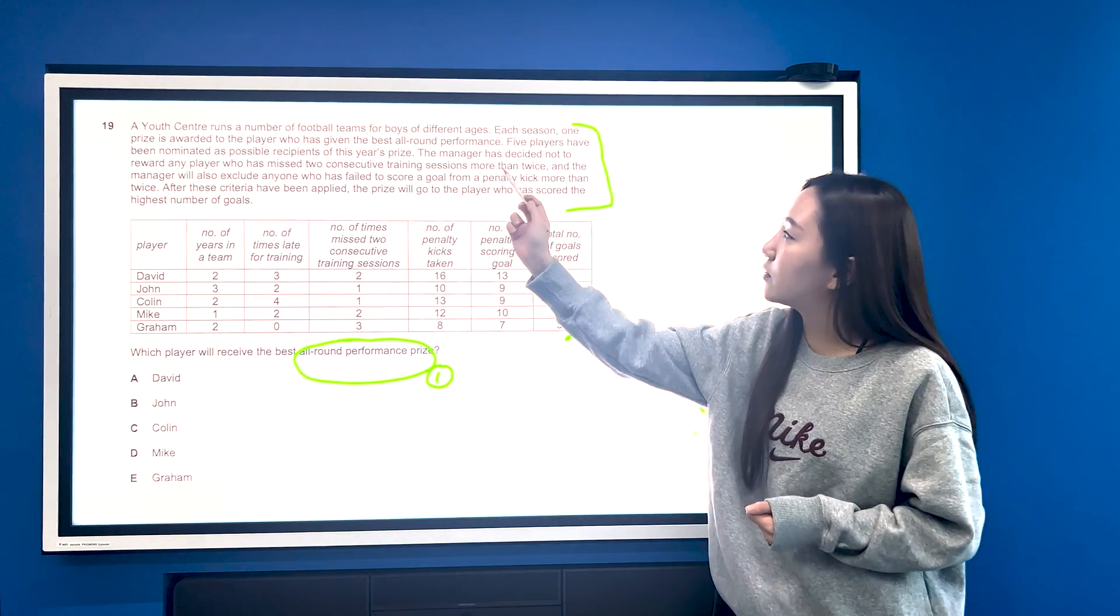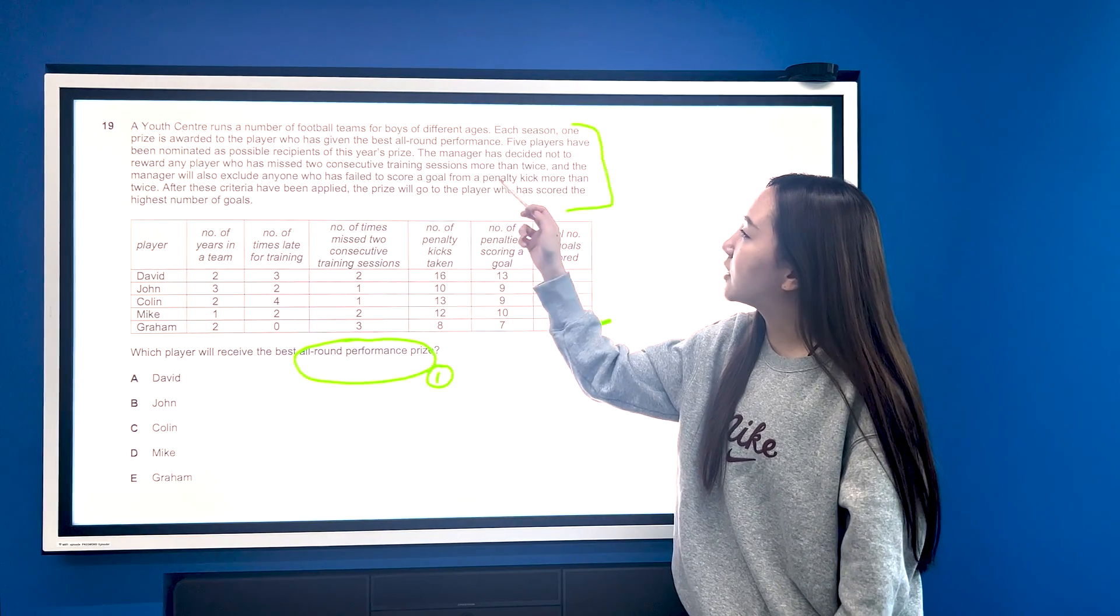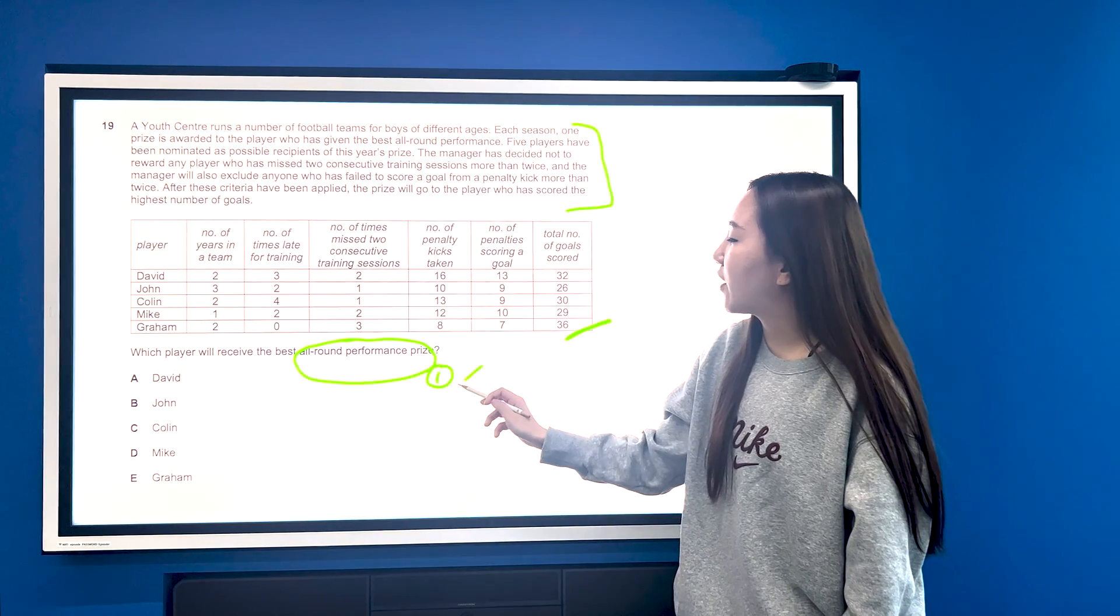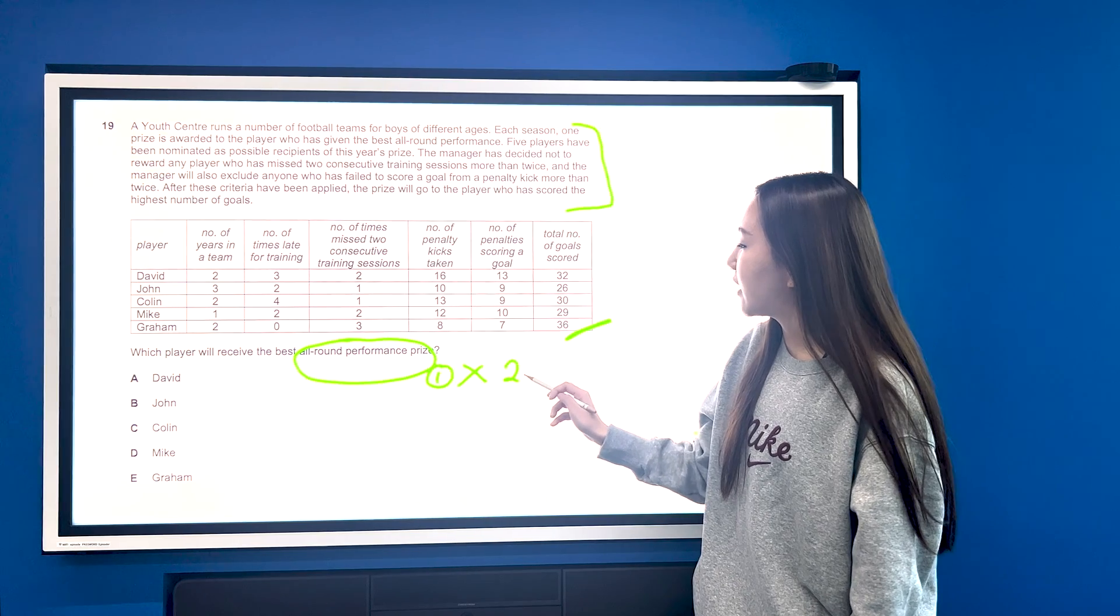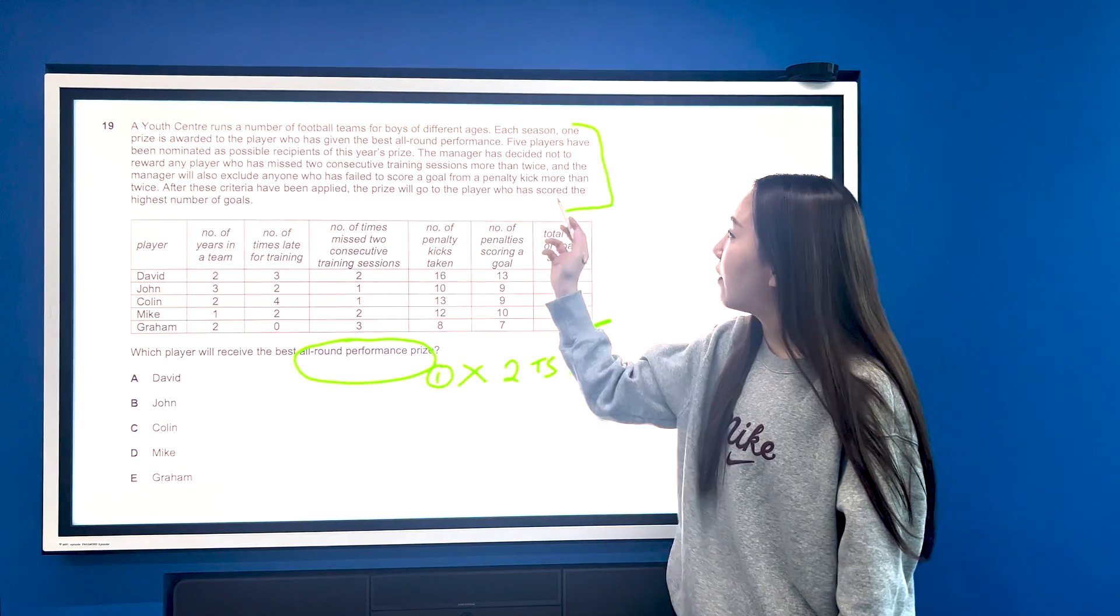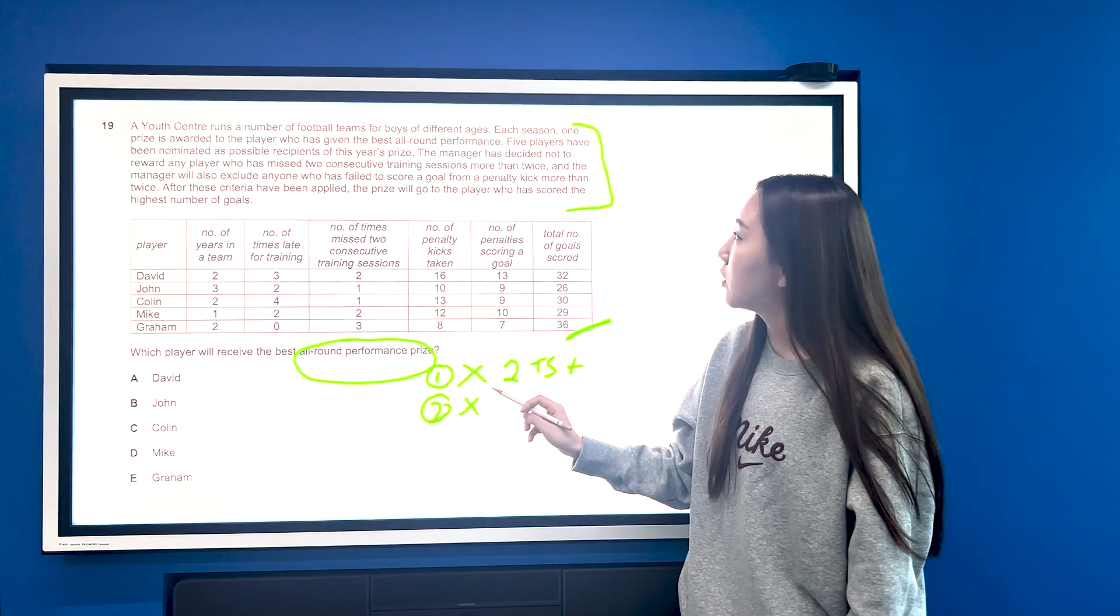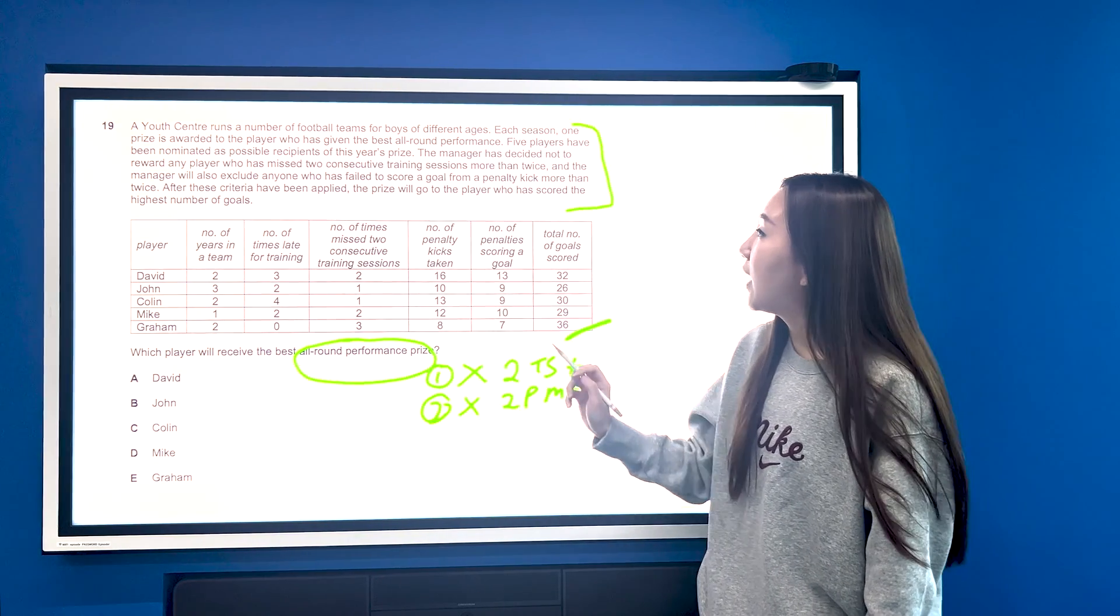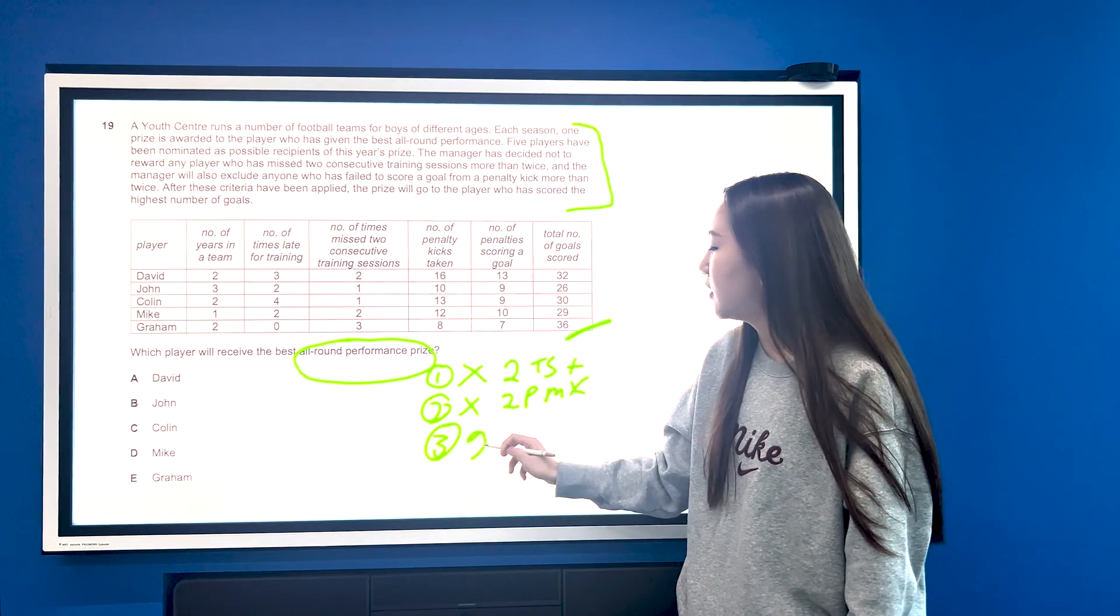So if we look here, a youth centre runs a number of football teams for boys of different ages. Each season one is given the best all-round performance prize. The manager has decided not to reward any player who has missed two consecutive training sessions. So two training sessions plus miss is a no. And the manager will also exclude anyone who has failed to score a goal from a penalty kick more than two times. So two penalties missed, no. And then finally after these criteria, whoever has scored the highest number of goals.